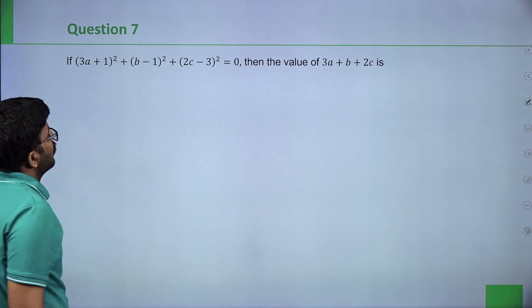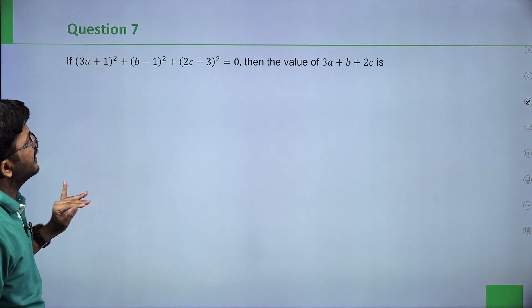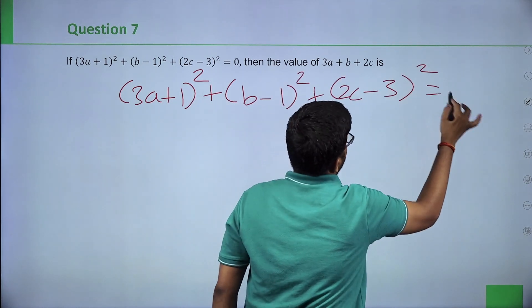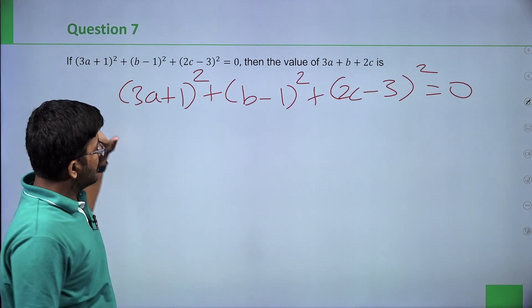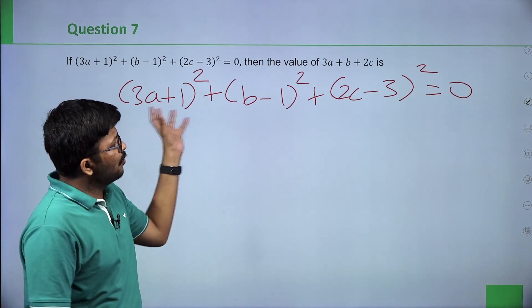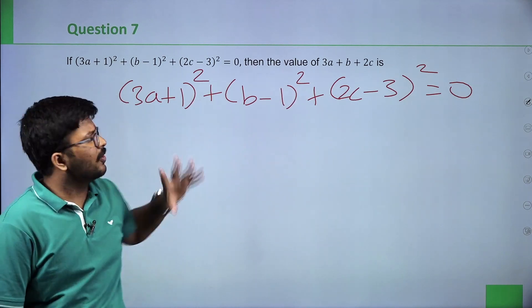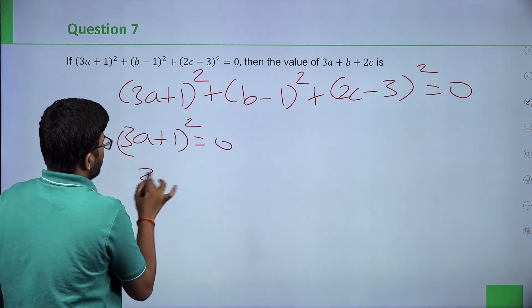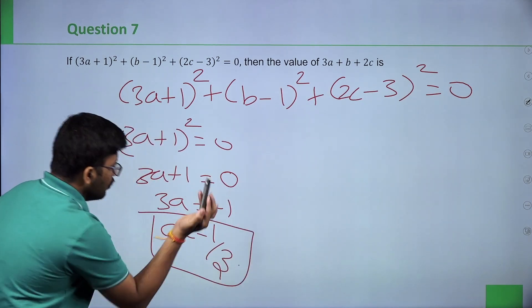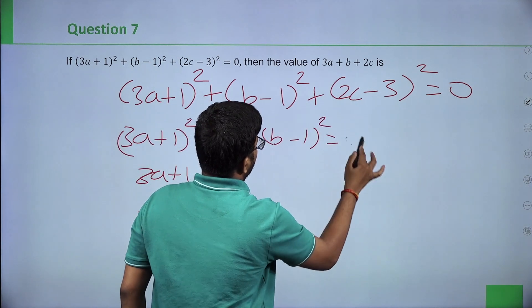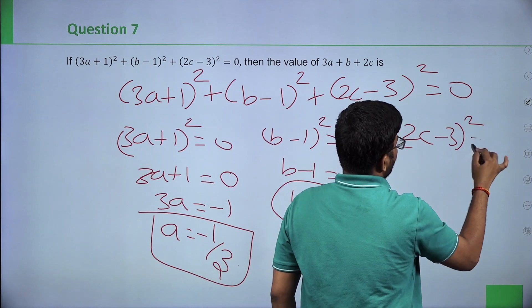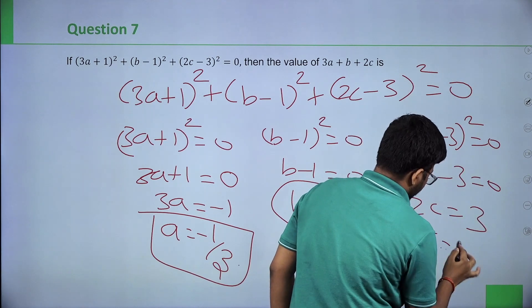Next question: 3a plus 1 whole square plus b minus 1 whole square plus 2c minus 3 whole square equals 0. Find the value of 3a plus b plus 2c. Since all three terms are squares, they cannot be negative. The only way their sum equals 0 is if each is individually 0. So: 3a plus 1 = 0, giving a = minus 1 by 3. b minus 1 = 0, giving b = 1. 2c minus 3 = 0, giving c = 3 by 2.